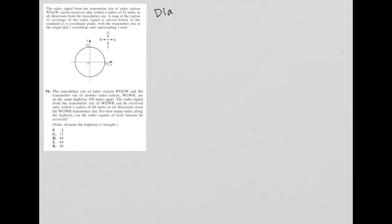This question has a diagram provided. We have a circle with a radius of 52, and the information tells us that our transmitter site is at the origin.